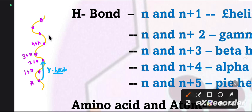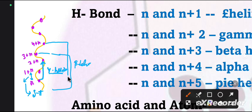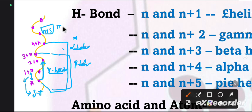Like beta helix - gamma is also rare. If we talk about N+2, it is very rare because there will be a lot of steric hindrance. If it forms, it is called delta helix. If the bond is between N and N+3, it will be called gamma helix. If it is N+3, it will be called beta helix. The most common in nature - if it is N+4 - is alpha helix. If it is N+5, it will be called pi helix.